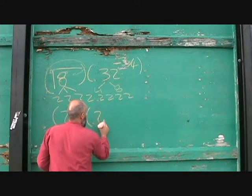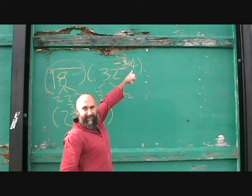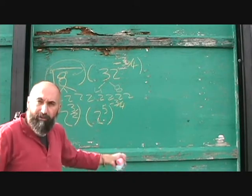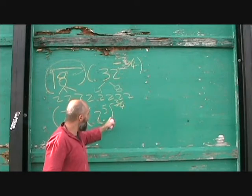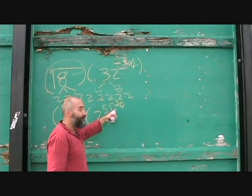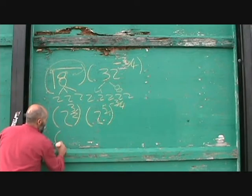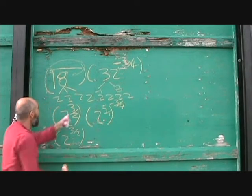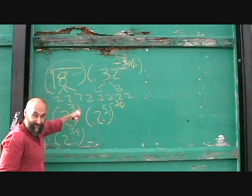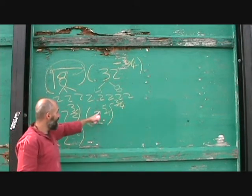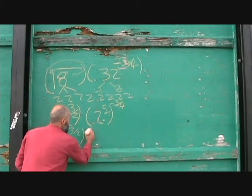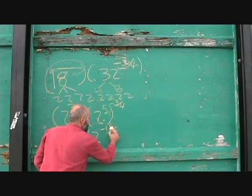So the way this works is we've got 2 to the power of 5, to the power of negative 3 over 4. Now we apply our power rule — power to a power means multiplication. So this becomes 5 over 1 times negative 3 over 4. Top times top, bottom times bottom: 5 times 3 is 15, 1 times 4 is 4. So this becomes 2 to the power of negative 15 over 4.